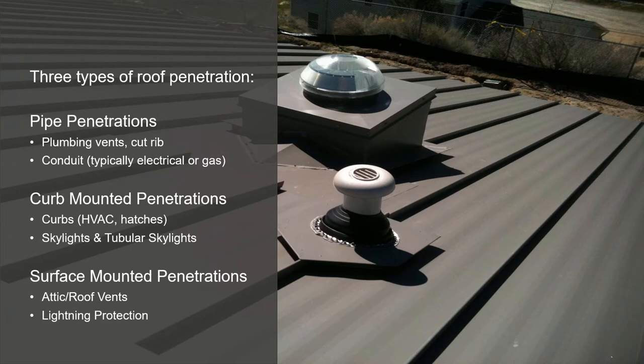The first type is pipe penetrations. Some examples include vent pipes such as plumbing vents and conduit. The second is curb mounted penetrations — examples include HVAC, hatches, skylights, and tubular skylights. The third category is surface mounted penetrations, with examples such as attic or roof vents and lightning protection.